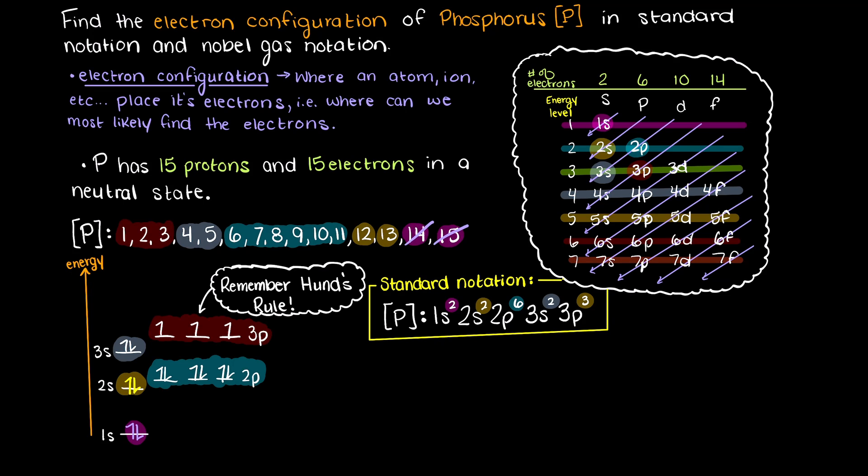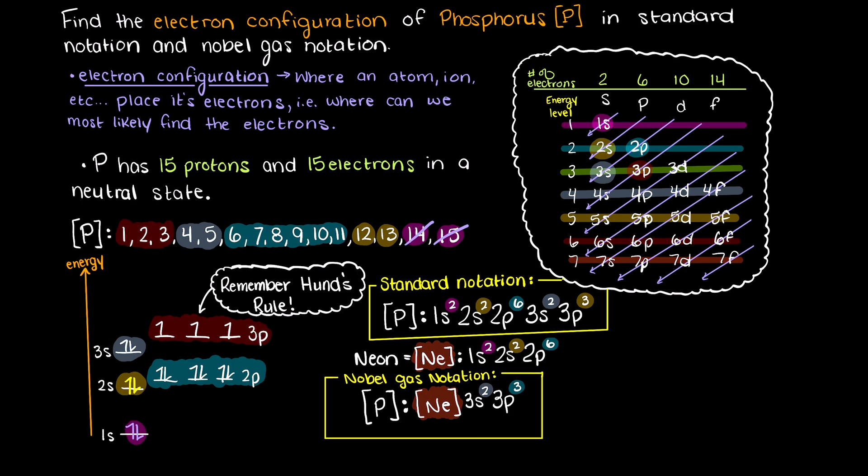To solve for the noble gas notation, we need to find out the noble gas that is underneath phosphorus. This noble gas is neon, which has 10 electrons, and a standard electron configuration of 1s2, 2s2, 3p6. Therefore, we can substitute this portion of our standard electron configuration notation and write it like so, thus converting it to noble gas electron configuration.